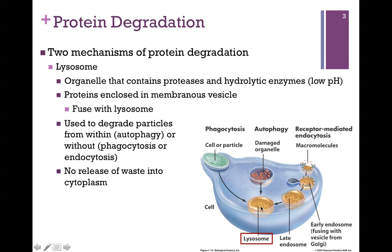Proteins that are going to be digested by the lysosome are first enclosed in a membranous vesicle — a lipid bilayer — and that fuses with the lysosome. This is another case where membrane fusion is important, and we have to make sure our address system is working properly, or we'll fuse the wrong membranes together. One way is autophagy: we encase a damaged organelle in a vesicle, and that fuses with the lysosome.